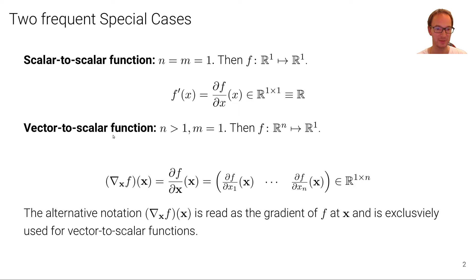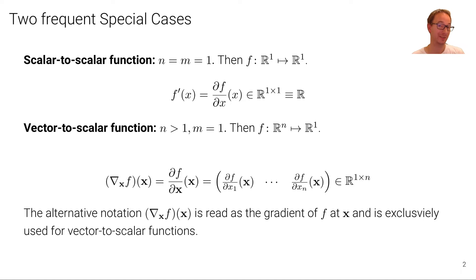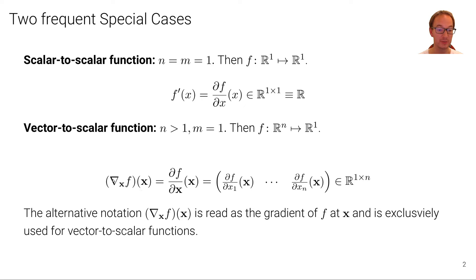The other special case is the vector-to-scalar function, where n is greater than 1 and m equals 1 — in other words, the function maps from R^n to R^1. This is a very common case in deep learning: n might be the number of parameters, but the function — the loss function — maps to only a single value that we want to optimize. In this situation we're dealing with the so-called gradient of f, denoted with the inverted triangle, the nabla symbol. We write this as the gradient of f with respect to the vector x, or alternatively the derivative of f with respect to x.